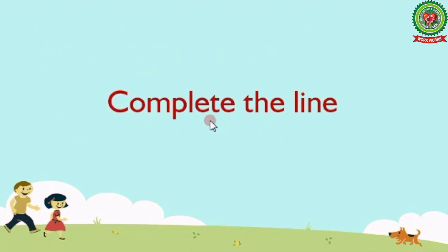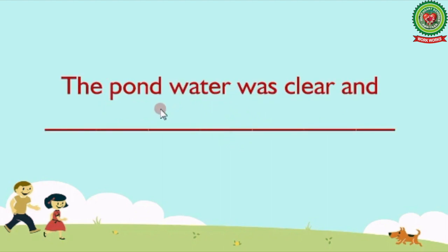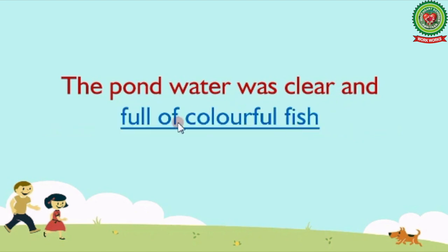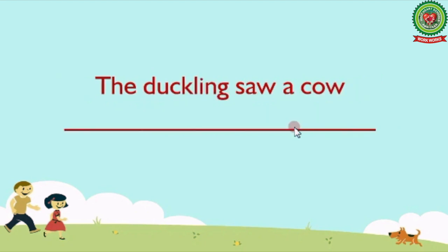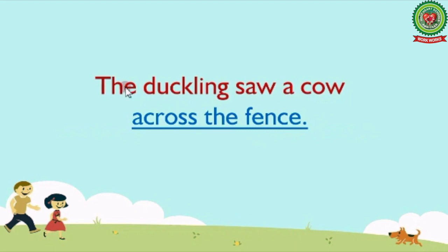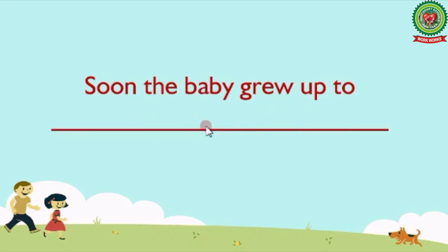Okay kids, here we have the next exercise: complete the line. You will be given few incomplete lines and you have to complete those lines. First one: 'The pond water was clear and ___.' Answer: full of colorful fish. The pond water was clear and full of colorful fish. Next one: 'The duckling saw a cow ___.' Answer: across the fence. Next one: 'Soon the baby grew up to ___.' Answer: be a beautiful swan.